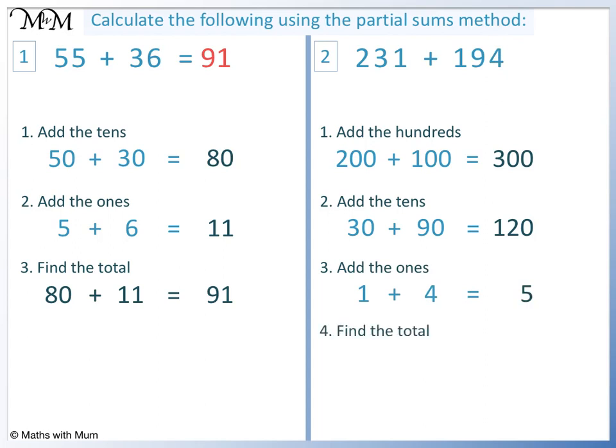Finding the total: 300 plus 120 equals 420, plus 5 equals 425. So the answer is 425.